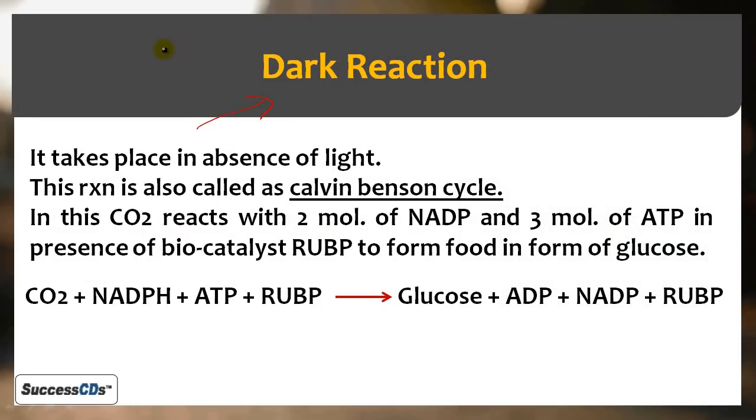Now that light reaction has produced energy sources NADPH2 and ATP, the plant has the energy to utilize for making food. Dark reaction takes place in absence of light. In the chloroplast, grana have light reactions, but the fluid outside called matrix or stroma is where dark reactions occur.